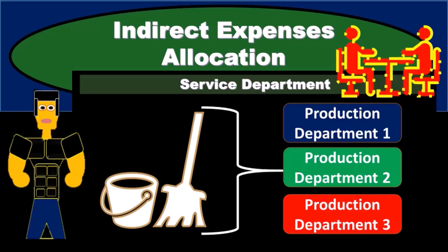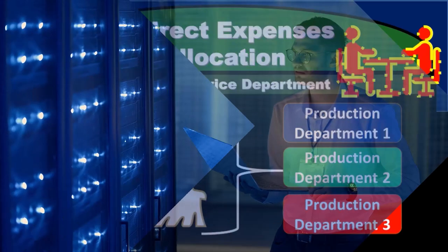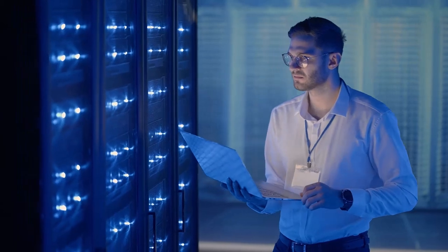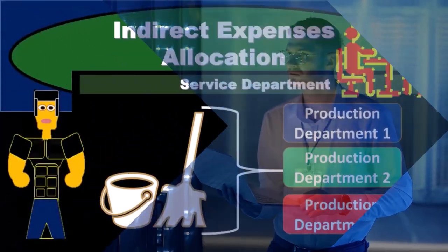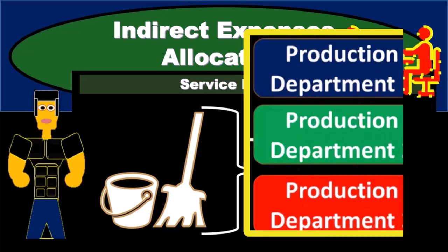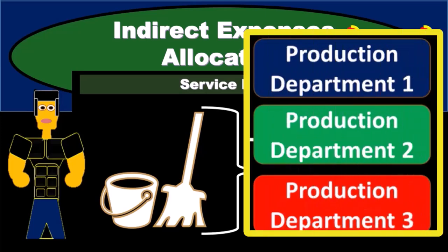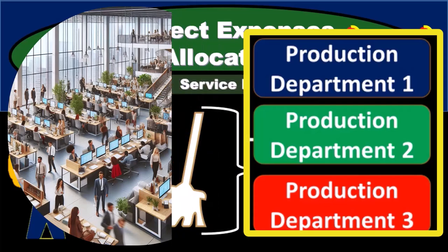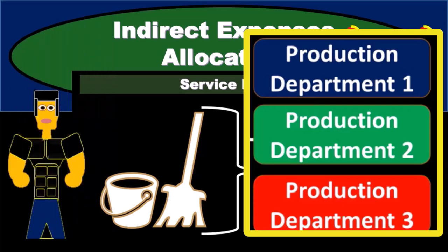In this presentation, we will take a look at the process of the allocation of indirect expenses. We have a decentralized system — a system where a company is breaking up into departments and providing responsibility for different departments. We then need to track the performance of each department, and we have two types of expenses that we're going to allocate to each department.